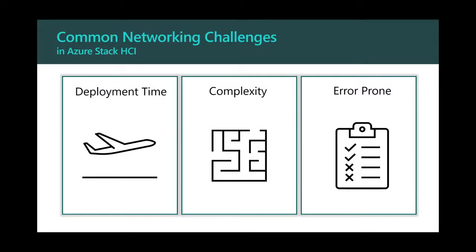Let's step back and make sure everybody's heard of Network ATC and what we're trying to solve for. Any time you're deploying a hyperconverged infrastructure, there's a whole lot of things you have to do. Because of all those things, it takes a lot of time — several hours in fact — to actually deploy the system. And because there's so many things to do, even if you script it out, it's complex with a lot of moving parts.